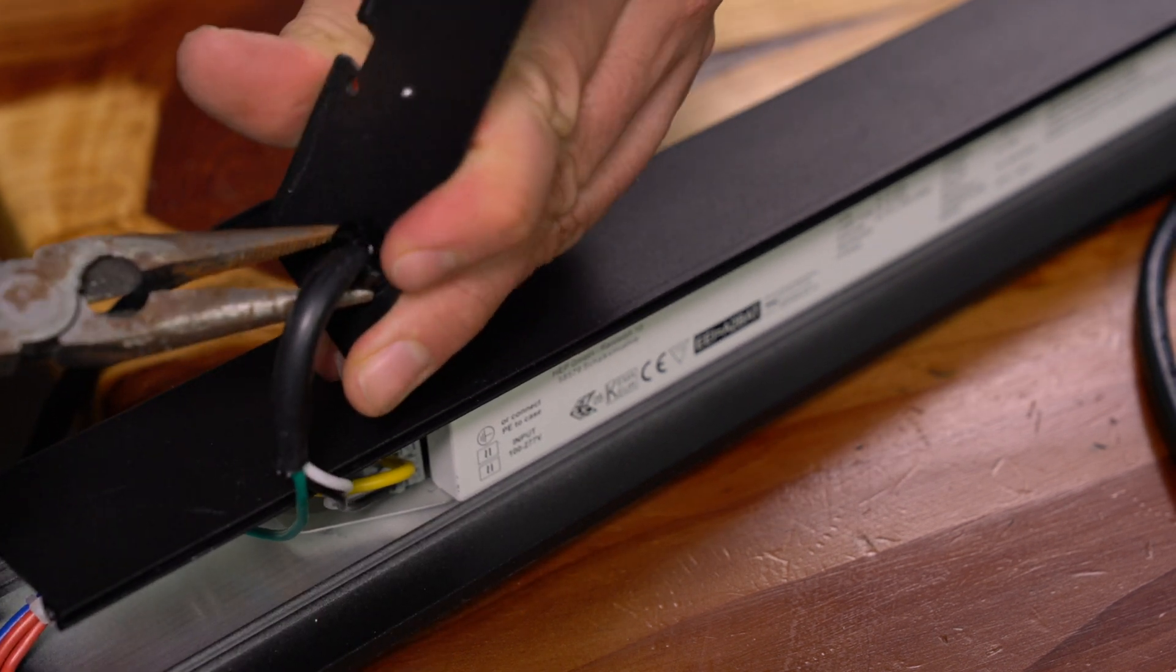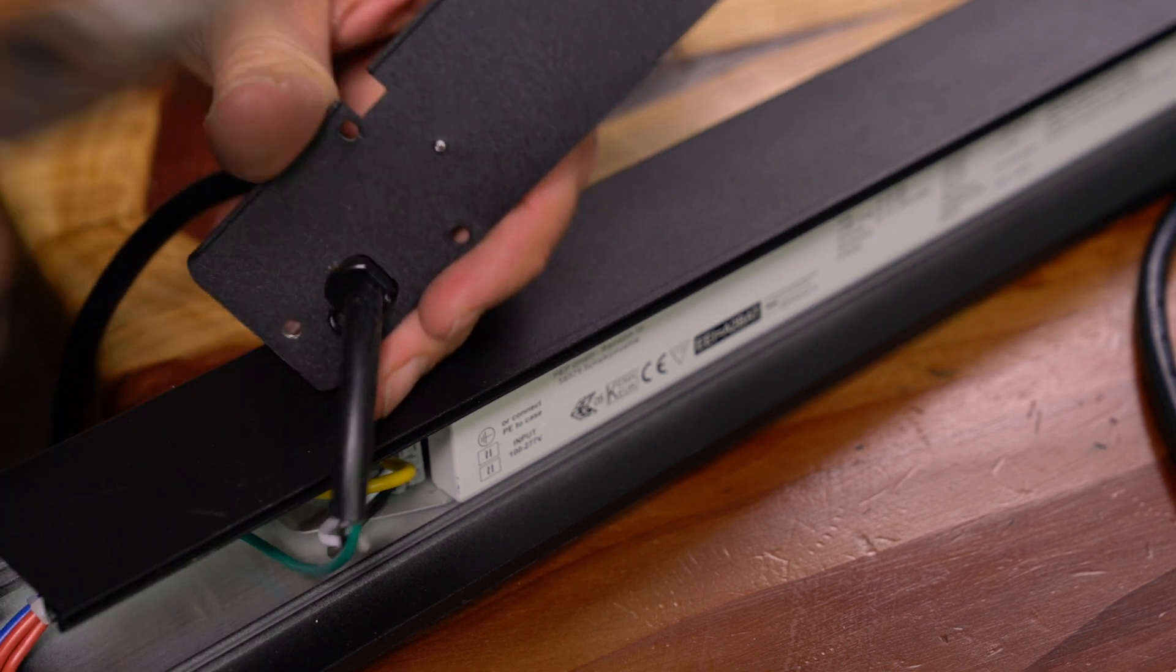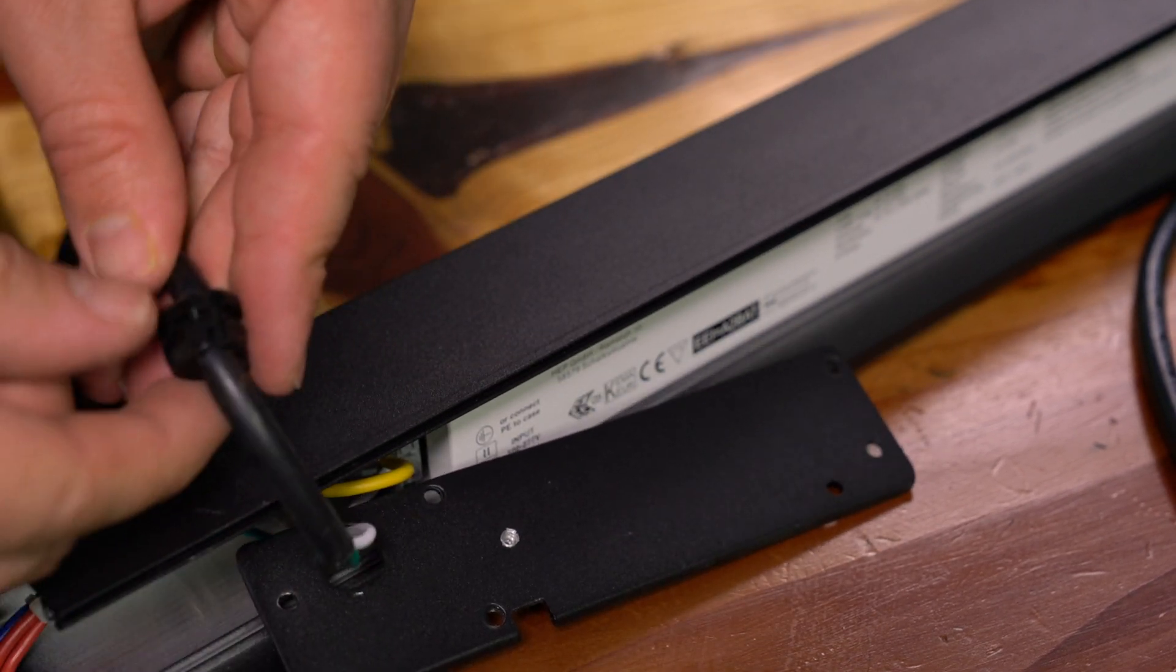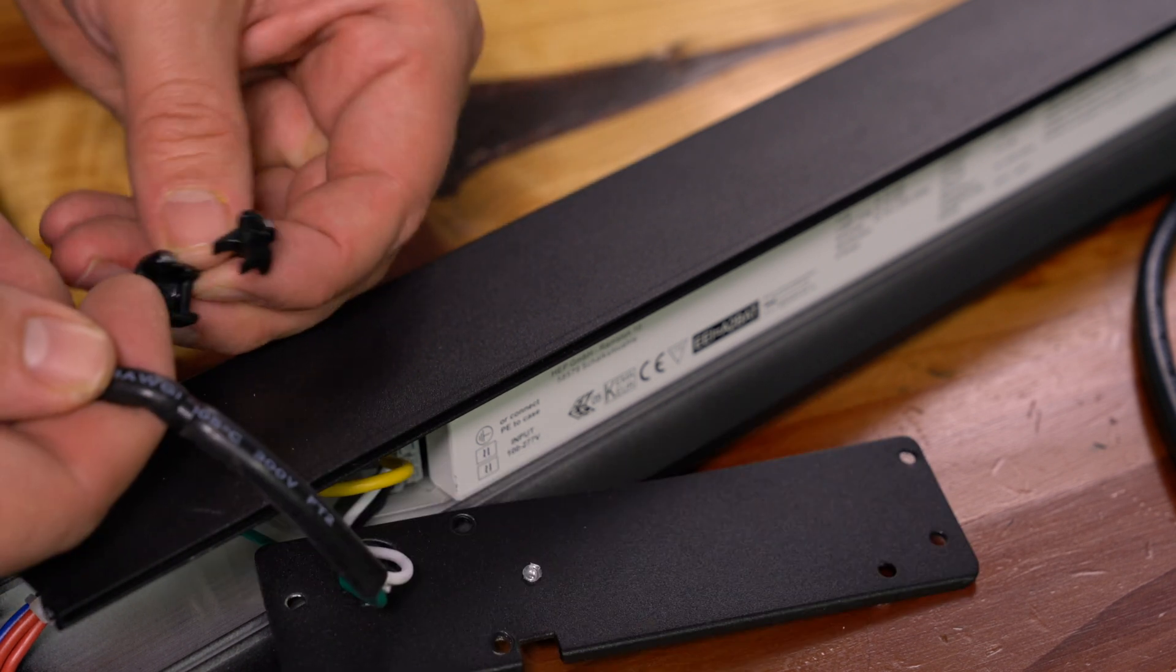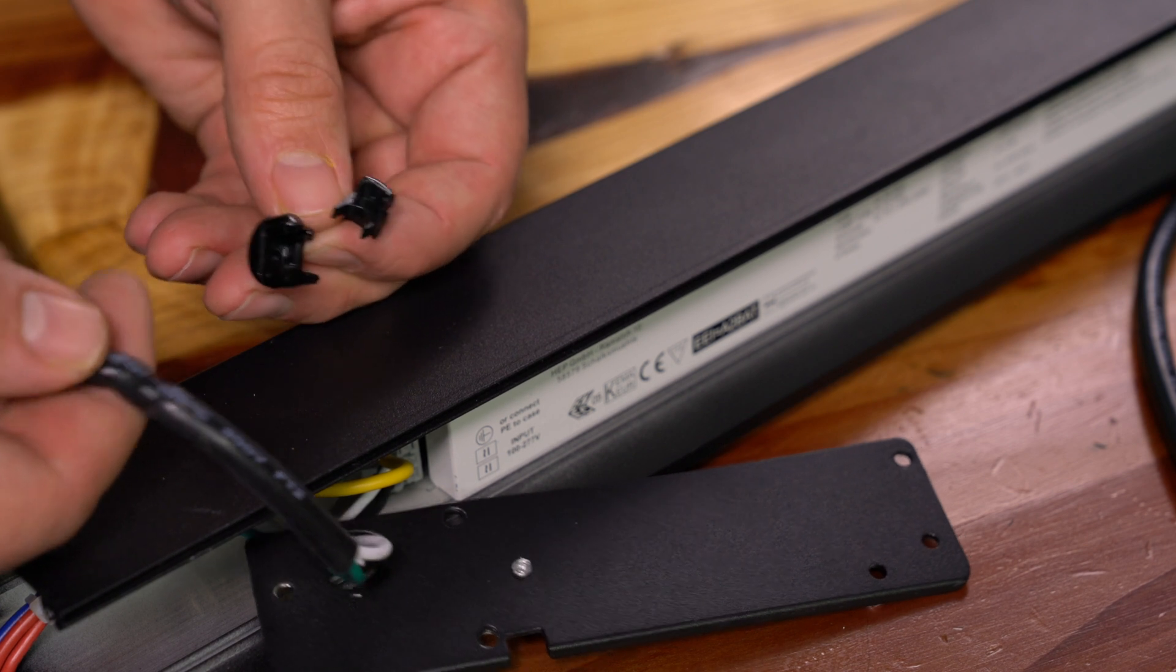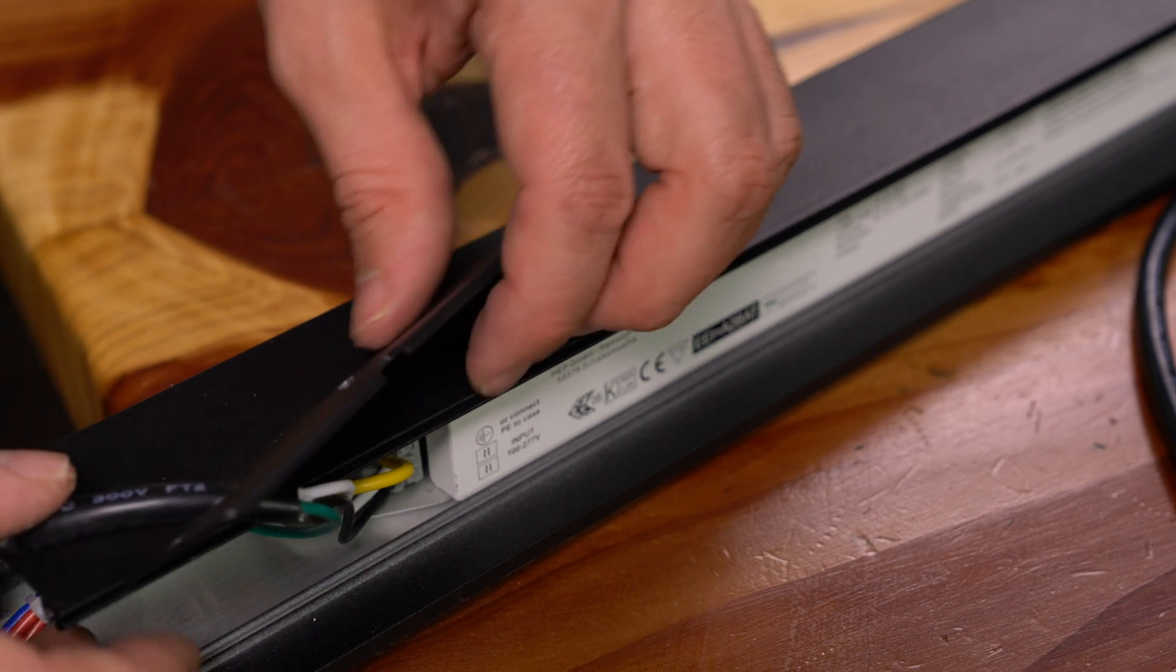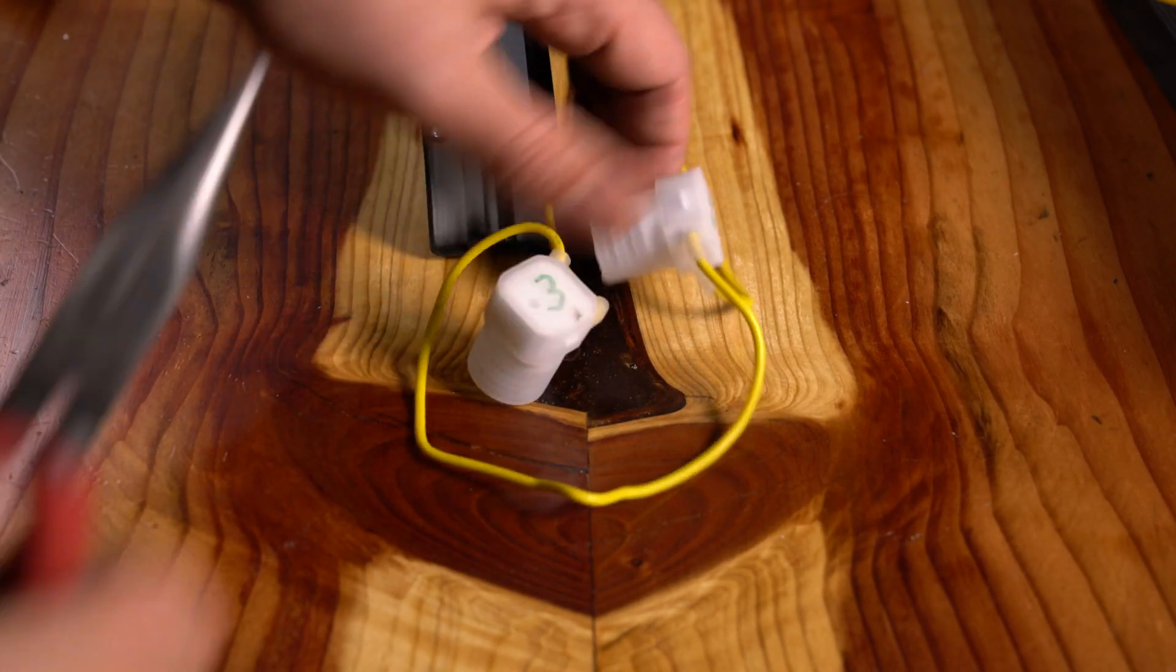Now when you're removing the cable protector here you might need to squeeze with a pair of pliers and kind of wiggle back and forth to get it out. But it eventually comes out pretty easily. And once it comes off then you can remove the actual end plate all together which you're going to want to do because we're going to drill it to pass through some wires.